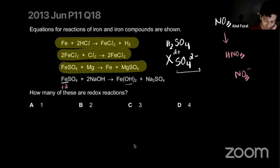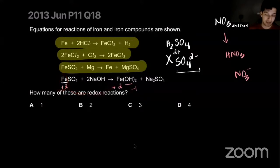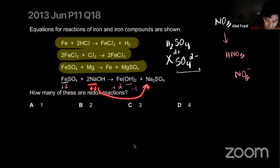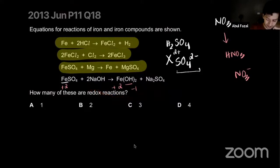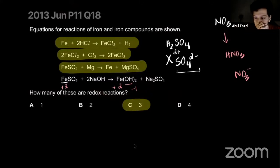Similarly, OH has a minus charge and there are two of them, so iron has a plus two charge. But look — iron is not changing its oxidation state in this reaction. NA has a plus charge going in and a plus charge going out. You'll realize there's no oxidation or reduction taking place here. So only three reactions are redox.